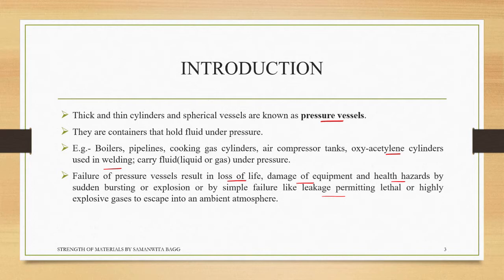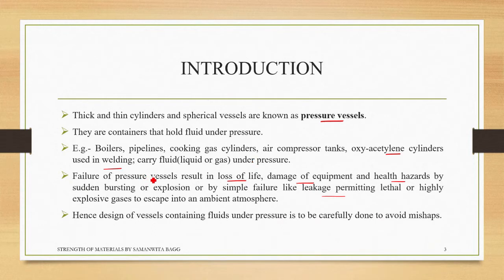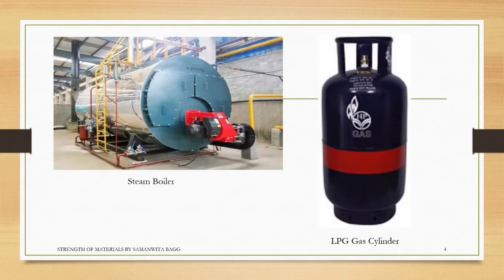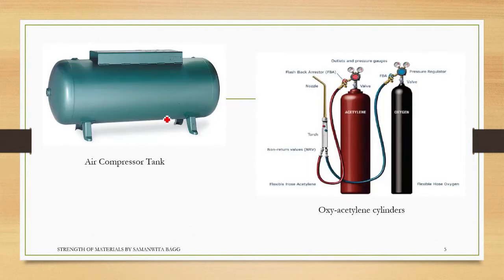If dangerous gases like SO₂ or NO₂ are released into the atmosphere, they are deadly and can kill a person on the spot. Hence, design of vessels containing fluids under pressure must be carefully done to avoid mishaps. You can see here examples: a steam boiler, an LP gas cylinder, an air compressor tank, and oxyacetylene cylinders.